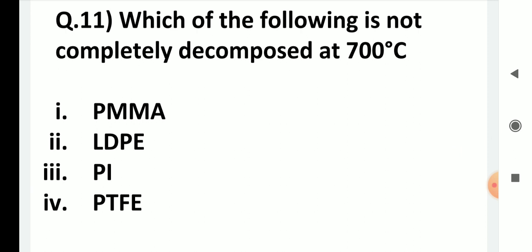Which of the following is not completely decomposed at 700 degrees? Choices: PMMA, LDPE, PI, and PTFE. The answer is PI — the third option is correct.